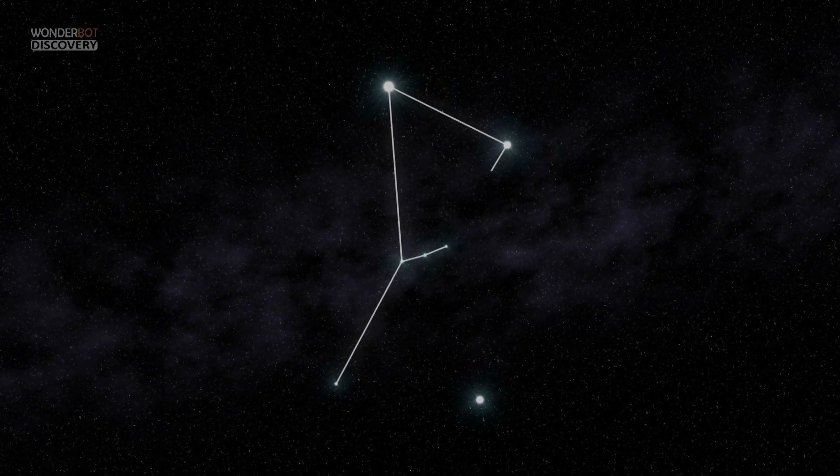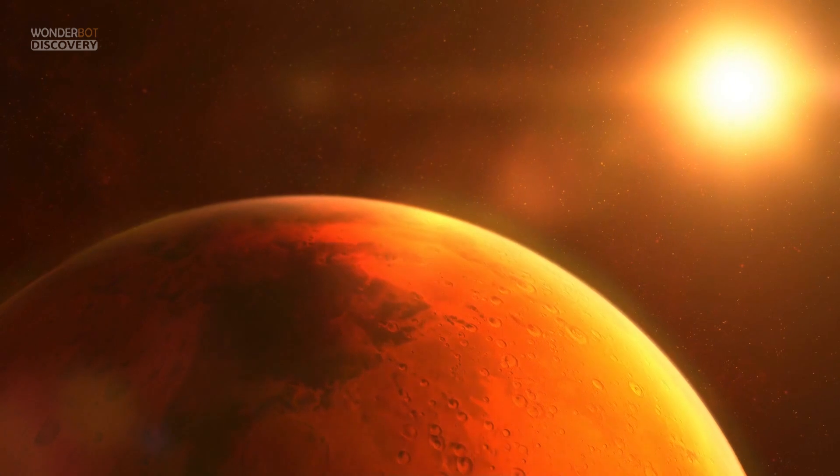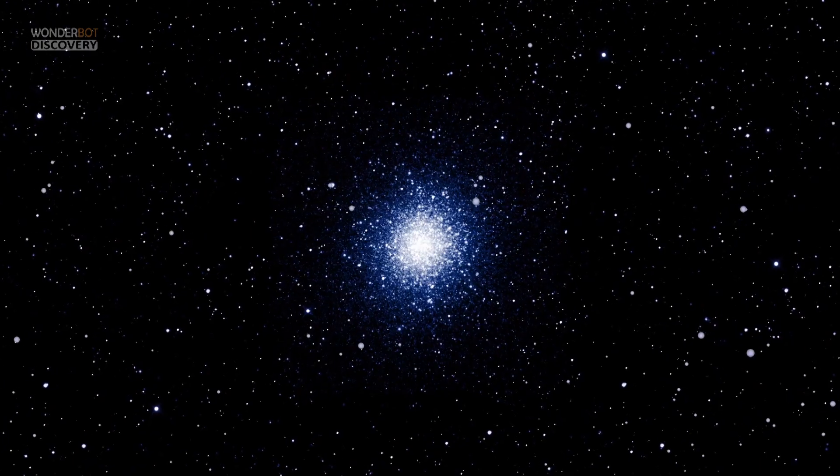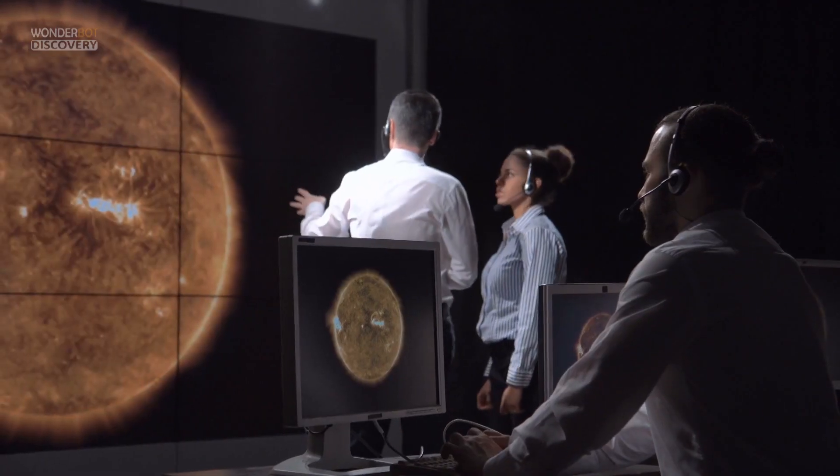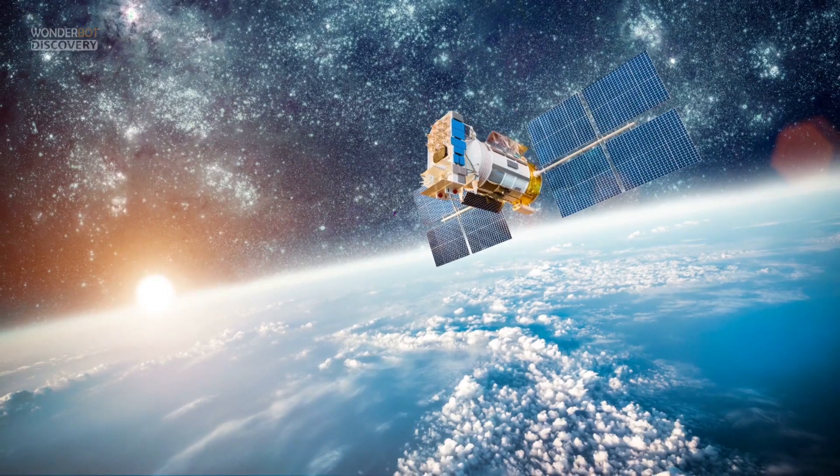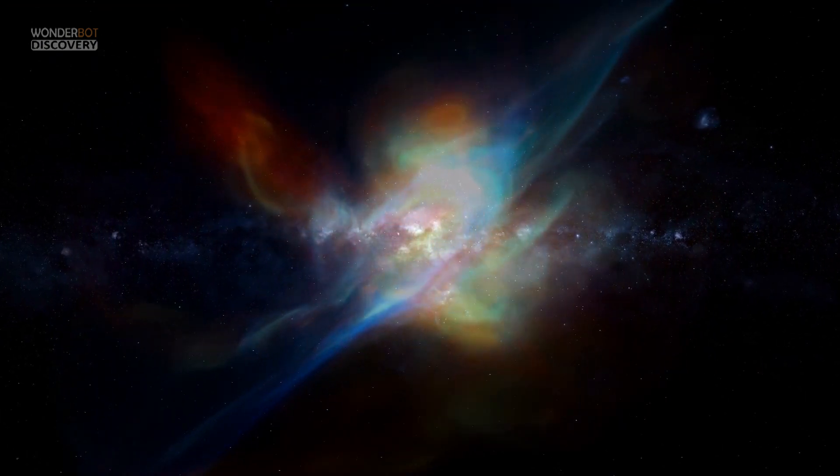Located in the constellation Orion, the star is about a thousand times the size of the sun. Betelgeuse's brightness has been dipping to the lowest point in the past 100 years and some scientists have suggested that the star is getting close to running out of fuel and going supernova.